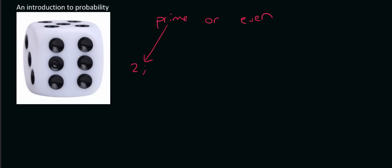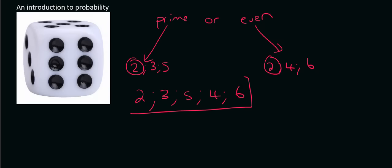What are the chances of rolling a prime number or an even number? The prime numbers would be two, three, and five. The even numbers would be two, four, and six. Now remember, the number two — you don't want to count that twice, that's only one number. So then there's three, five, four, and six. That's five numbers out of a total of six. So the chances of rolling a prime number or an even number is five out of six.